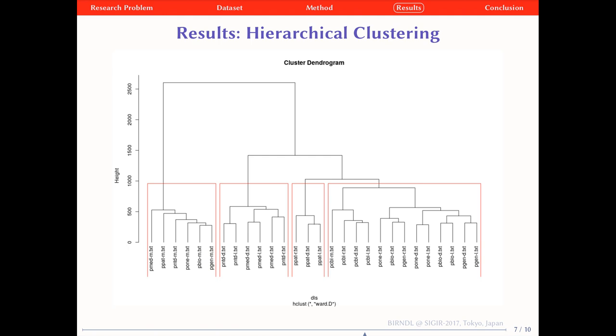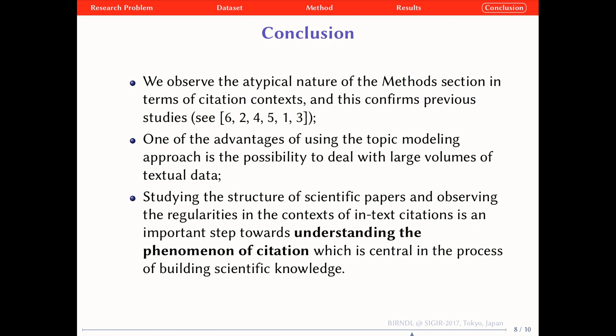As a conclusion, this paper provides new evidence on the structure of scientific papers by observing the patterns in the context of indexed citations and identifying the typology of citation contexts. Studying the structure of scientific papers and observing the regularities in the context of indexed citations is an important step towards understanding the phenomenon of citation, which is central in the process of building scientific knowledge.